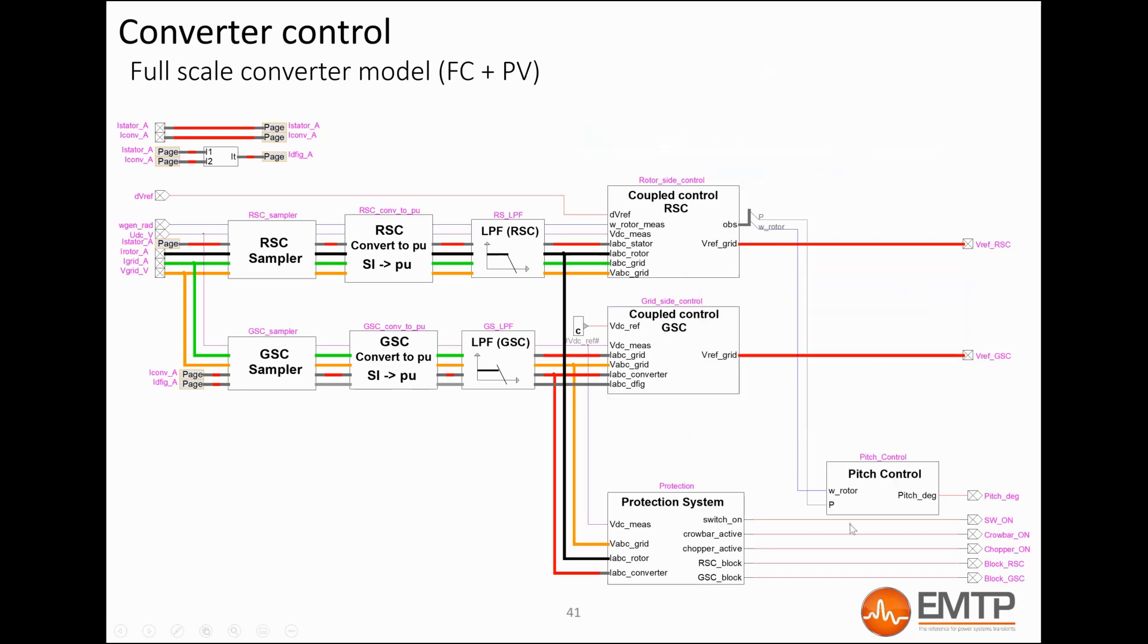The pitch control block limits the mechanical power extracted from the wind by increasing the pitch angle when the wind speed is above its rated. The protection system block contains cut-in and cut-off speed relays, low voltage and over voltage relays, machine side converter and grid side converter overcurrent protections, and DC resistive chopper control. The LVRT and OVRT functions are in this block.